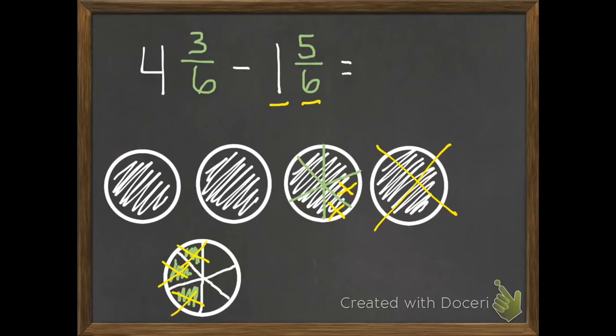So what am I left with? How many holes? 1, 2. And how many of these sixths do I have left? 1, 2, 3, 4. So 2 holes and 4 sixths. Can I simplify 4 sixths? Well, they're both even, so I know I can divide them by 2. So that's going to equal 2 thirds. So 2 and 2 thirds is our answer.